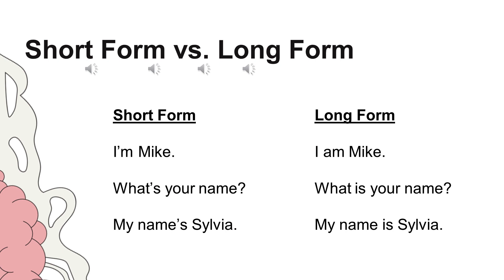In English, we have casual short form speech. We use it when we know the person well or when we are on the same level and will be working closely with that person. The long form of speech is formal and more professional. It is used when we meet someone for the first time and when we greet people who are in a higher position or to show respect. We also use the long form in written format.